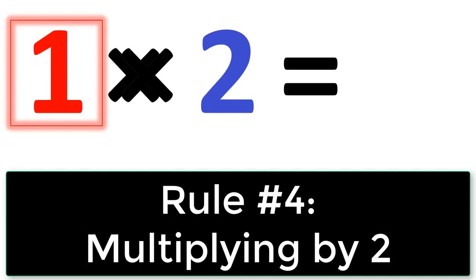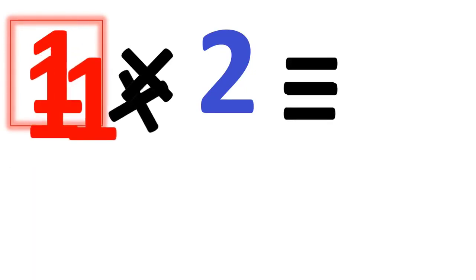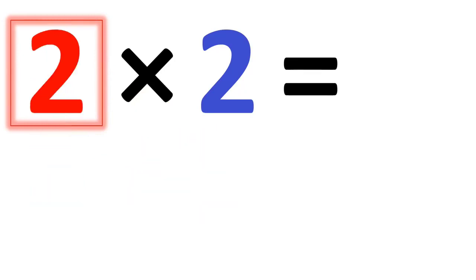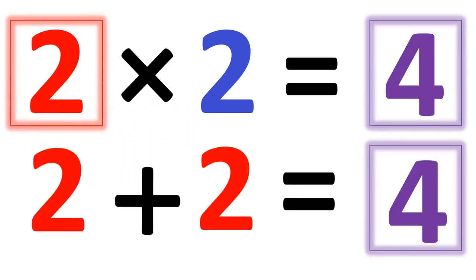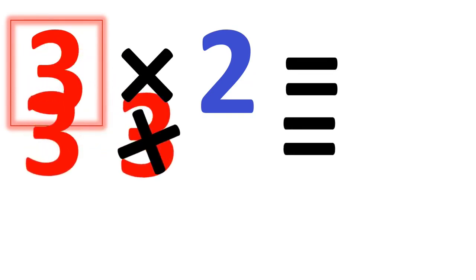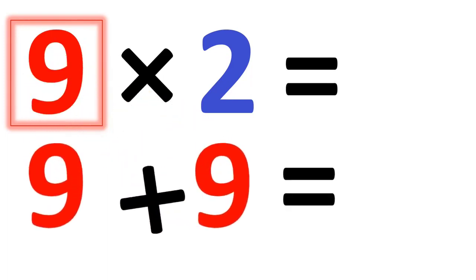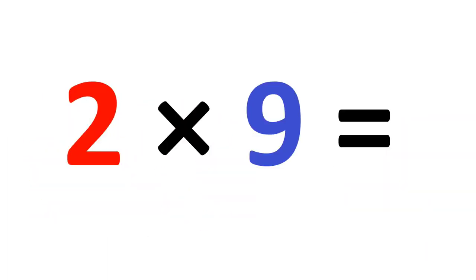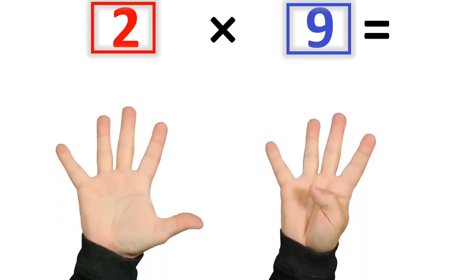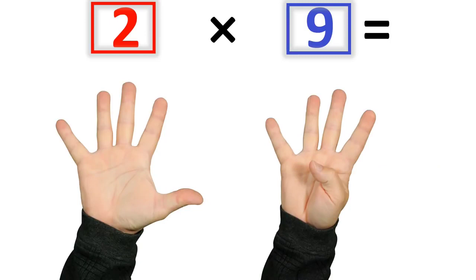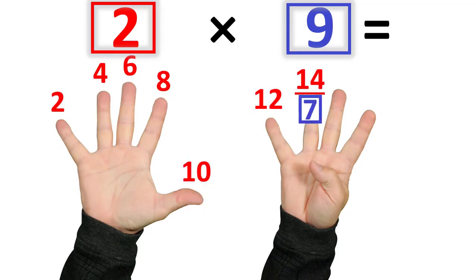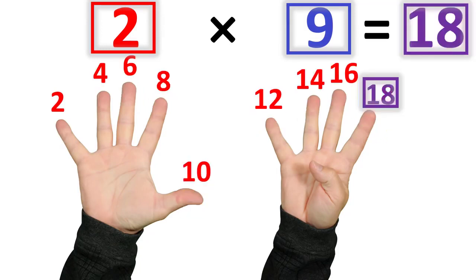Next one is multiplying anything times the number 2. There are two things you can do there. First thing you can do is you can double the number because 2 times 2 is the same thing as 2 plus 2. 3 times 2 is the same thing as 3 plus 3, etc. Well if you forget some of your basic addition, there's a backup method. That's the skip counting method. So if you take 9 times 2 or 2 times 9, what you do is you skip count by the number 2 9 times. So you go 2, 4, 6, 8, 10, 12, 14, 16, and then you stop at 18 because that's the 9th term. Very easy right?